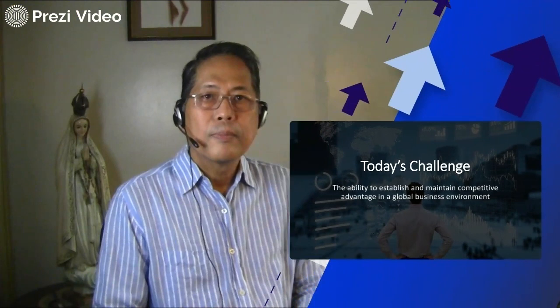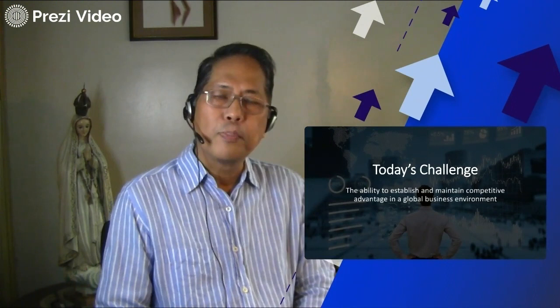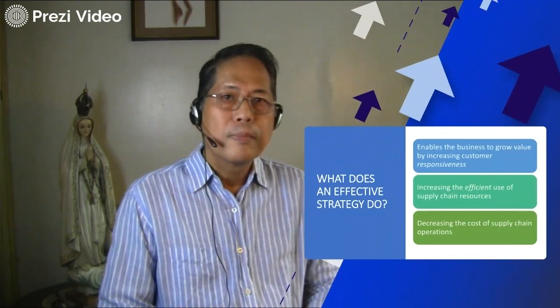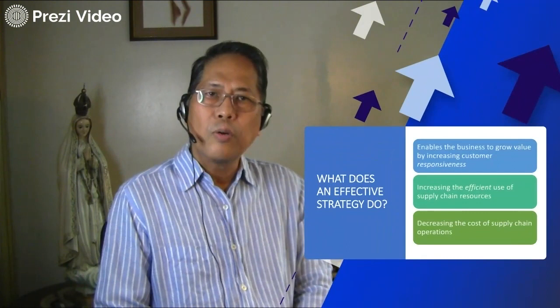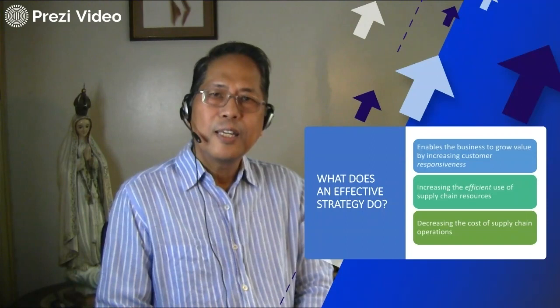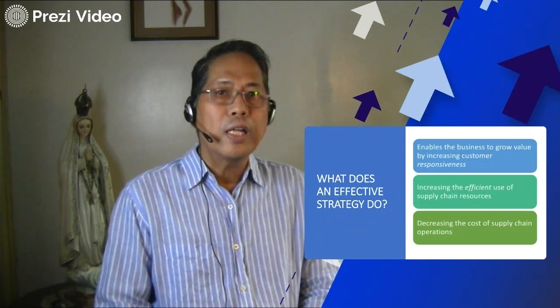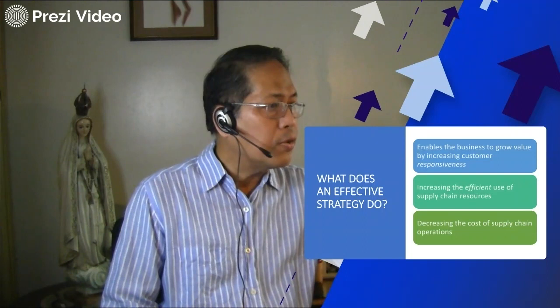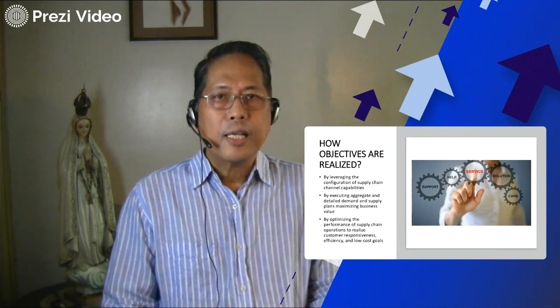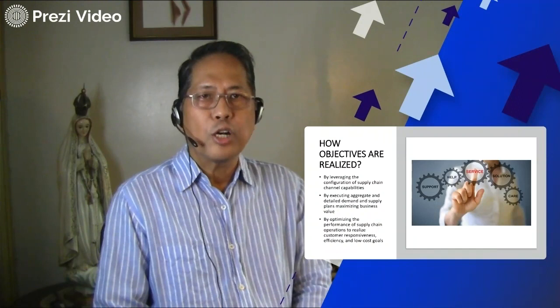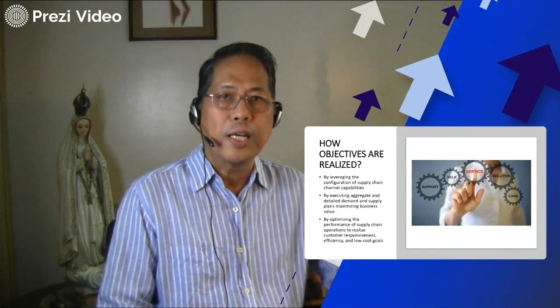Perhaps the most critical dynamic in achieving this objective is the front of the supply chain strategy. An effective supply chain strategy enables the business to grow value by increasing customer responsiveness, increasing the efficient use of supply chain resources, and decreasing the cost of supply chain operations. These fundamental objectives are realized by leveraging configurations of supply chain channel capabilities, executing aggregate and detailed demand and supply plans, maximizing business value, and optimizing the performance of supply chain operations to realize customer responsiveness, efficiency, and low-cost goals.